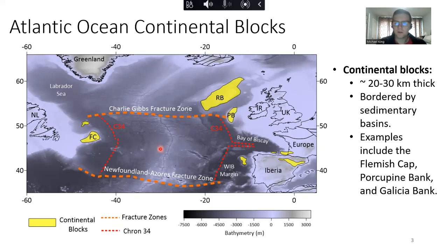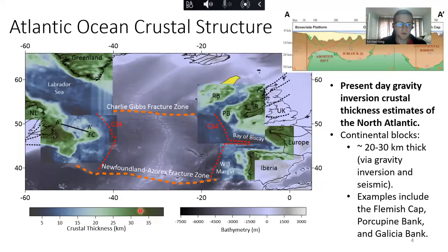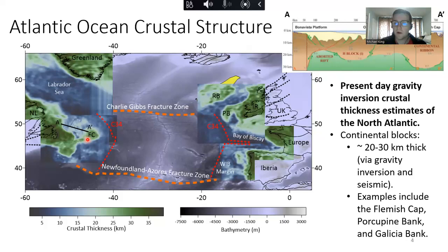One of the best ways to define the crustal architecture of these continental blocks is using crustal thickness estimates calculated by a 3D gravity inversion, shown on the left-hand side with respect to the rifted margins of interest. Referencing the color bar, the blues represent areas of relatively thin crust and the greens represent areas of relatively thick crust. For example, looking at the Newfoundland margin, the geometry of the Flemish Cap stands out, representing a continental block ranging in thickness from about 25 to 30 kilometers. We can also use other datasets such as seismic reflection profiles to define these blocks.